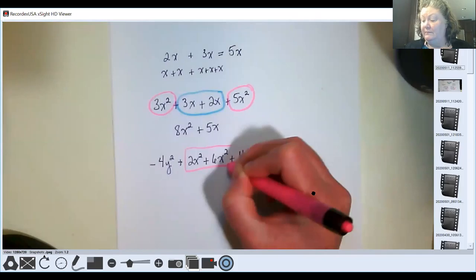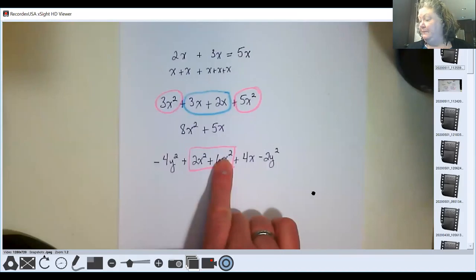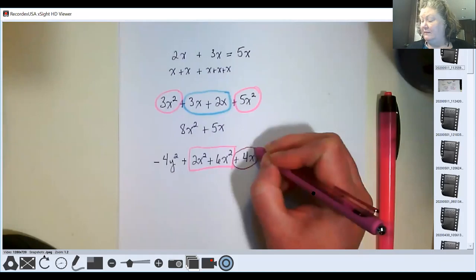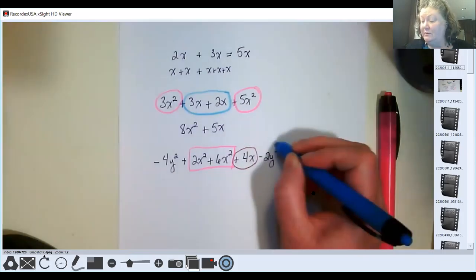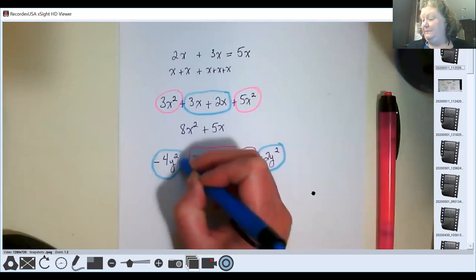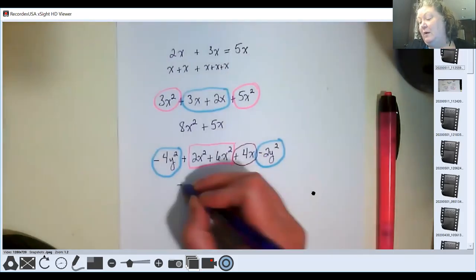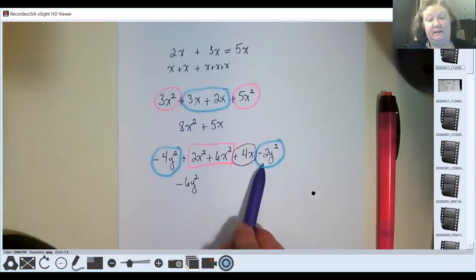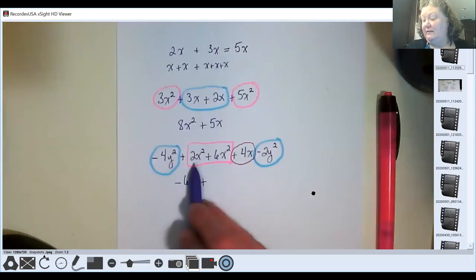These two are like terms. They both have an X raised to the second power. This one does not match those because it's just a plain X. But what I do have is this negative Y, or negative 2Y squared, is a like term with this one. So to get this rewritten, we would end up with negative 6Y squared. Negative 4 and negative 2 would give us negative 6Y squared plus 2 plus 6 is 8X squared plus 4X.